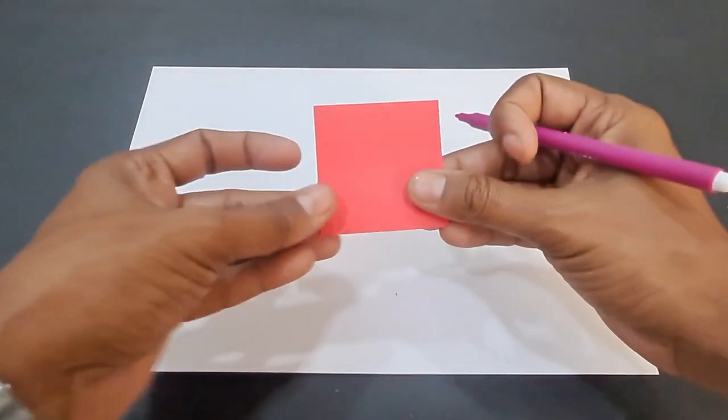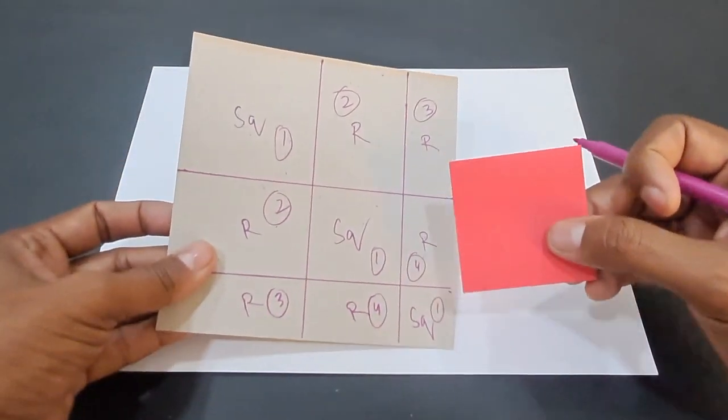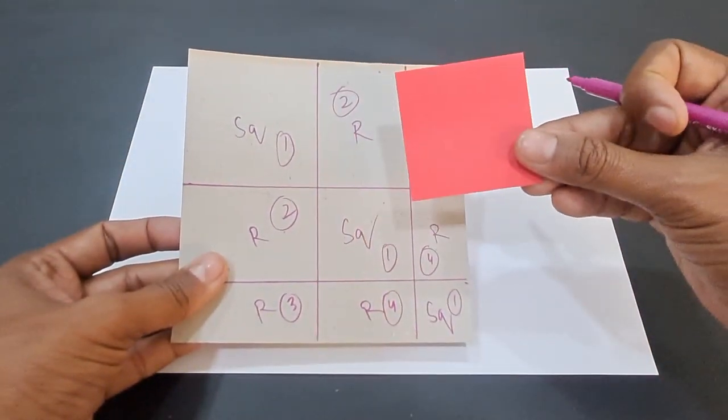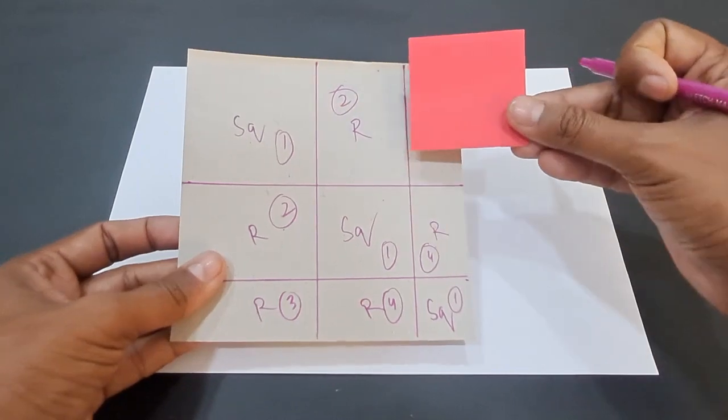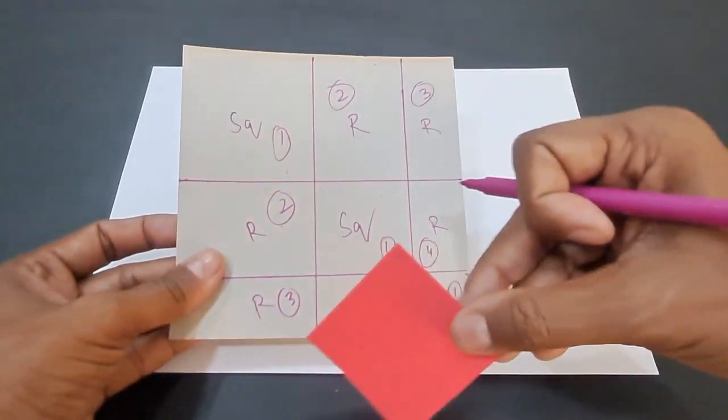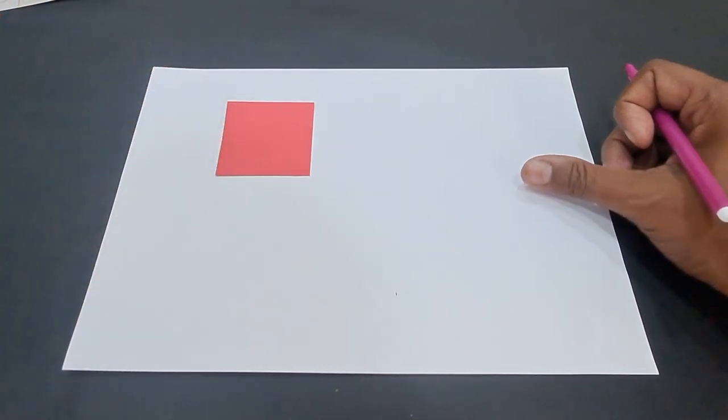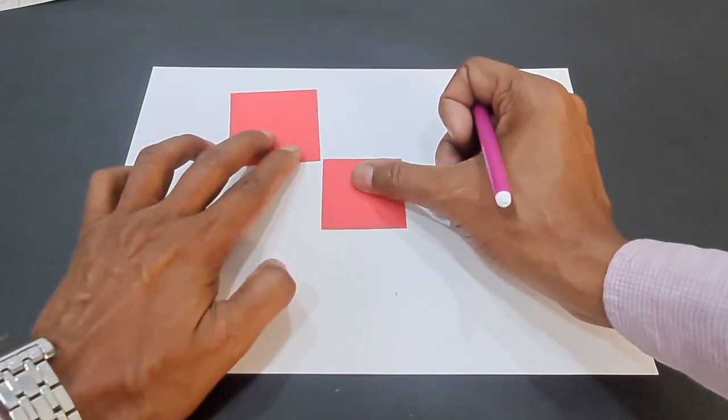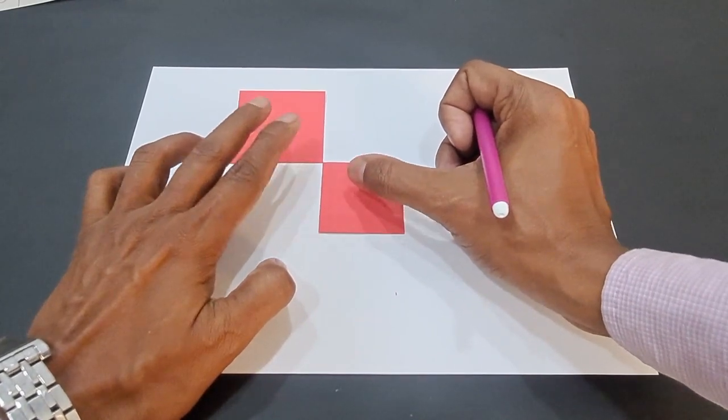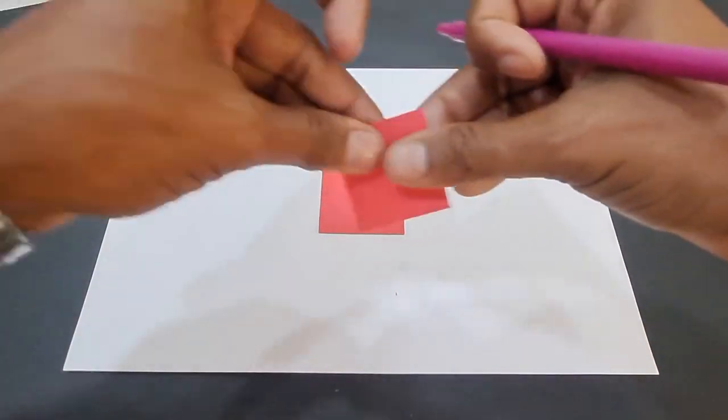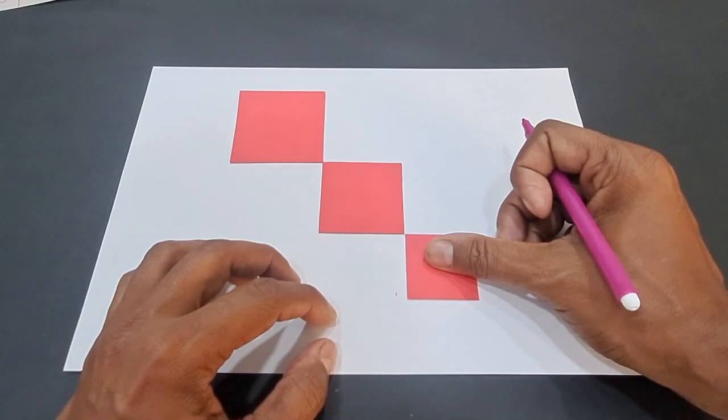After having cut the square sheet of paper into 9 parts, you will obtain different parts like this and we are going to place them like this. So this is the first part, followed by the second square which will be like this because it was diagonal. The third square will be like this.